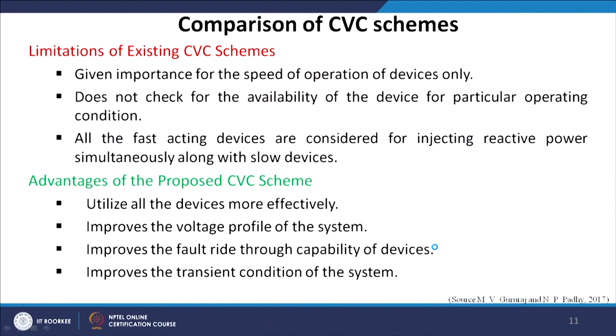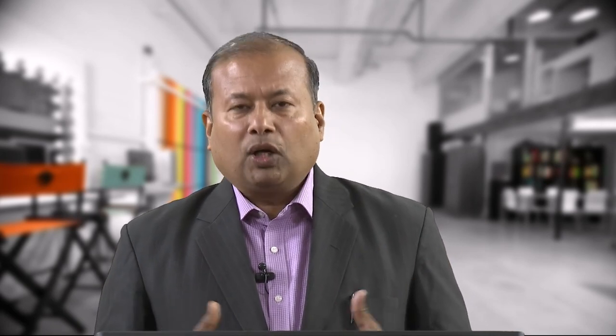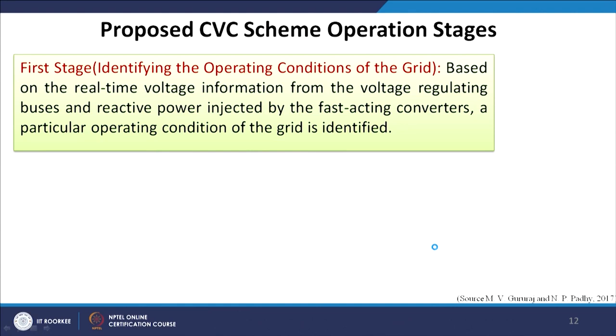The proposed model suggests utilizing all devices more effectively — the OLTC, STATCOM, DFIG, and DC microgrid all have to participate simultaneously, which improves the voltage profile of the system at large. It also improves the fault ride-through capability and the transient conditions of the system. The approach involves: first, identifying the operating conditions of the grid based on real-time voltage information; and second, checking for device availability and assigning master and slave roles.